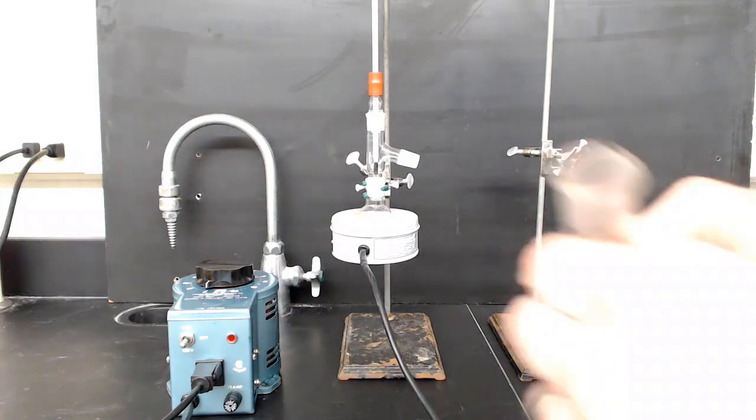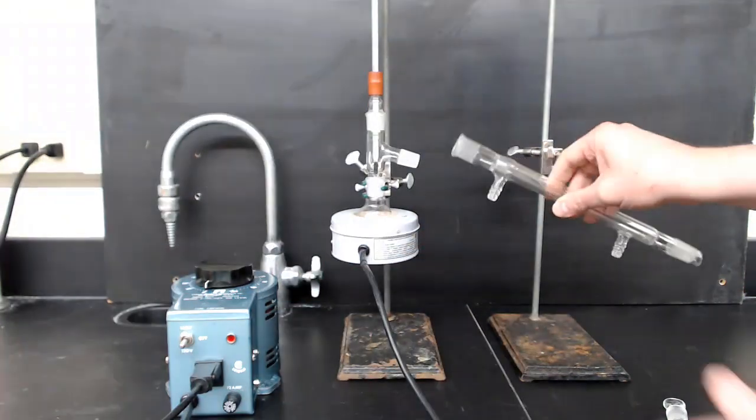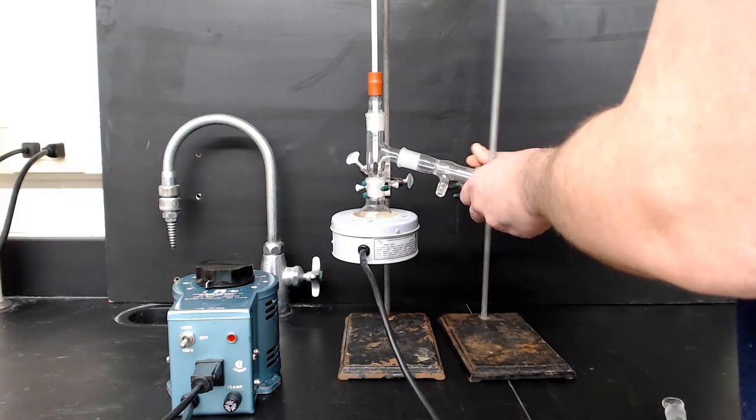Next, we're going to put on a condenser. The condenser connects to the three-way adapter and needs to be clamped to make sure it doesn't fall over. Clamp it securely.